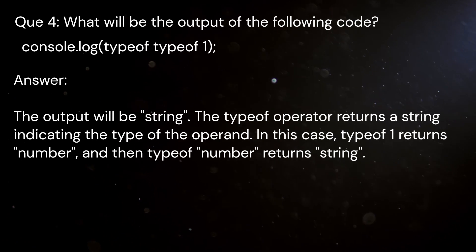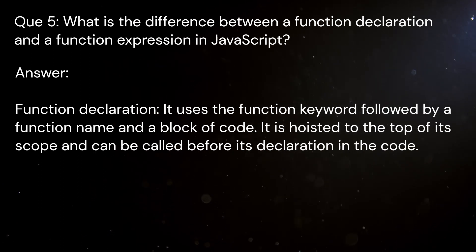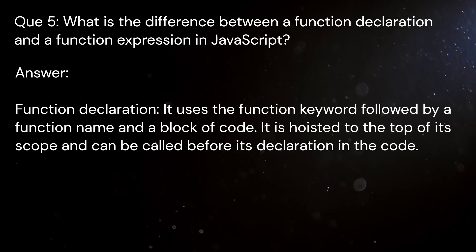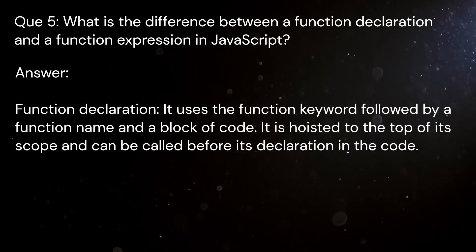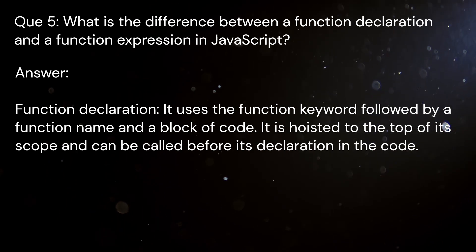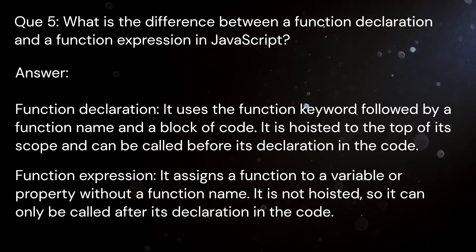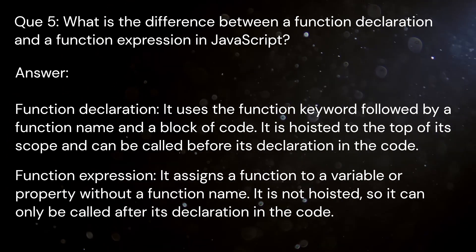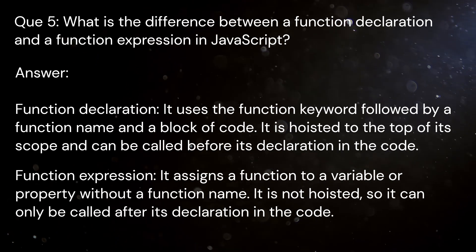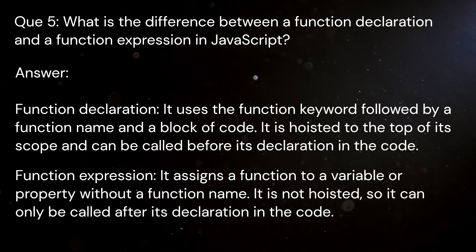Question 5: What is the difference between a function declaration and a function expression in JavaScript? Answer: A function declaration uses the function keyword followed by a function name and a block of code. It is hoisted to the top of its scope and can be called before its declaration in the code. A function expression assigns a function to a variable or property without a function name. It is not hoisted, so it can only be called after its declaration in the code.